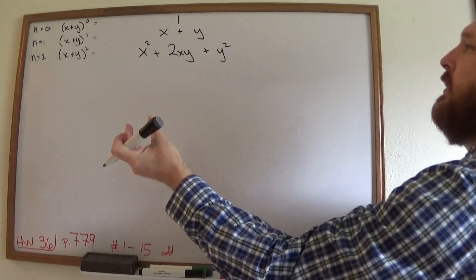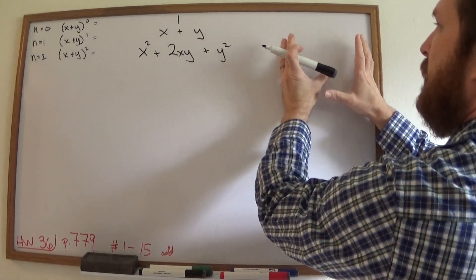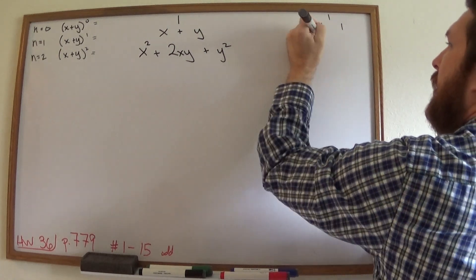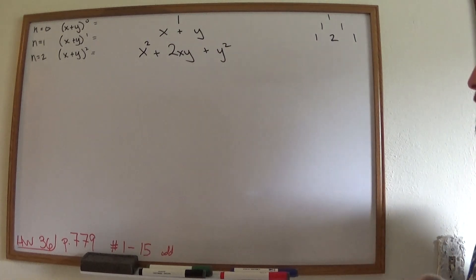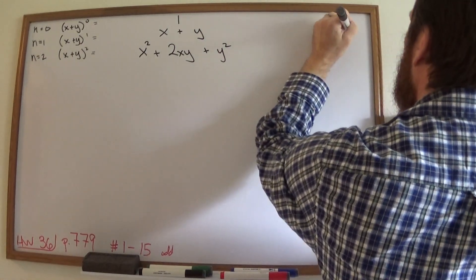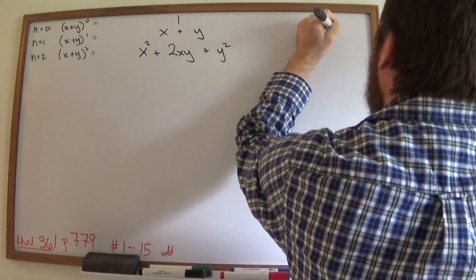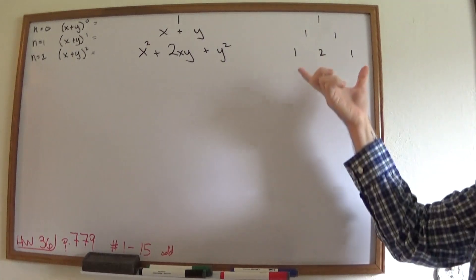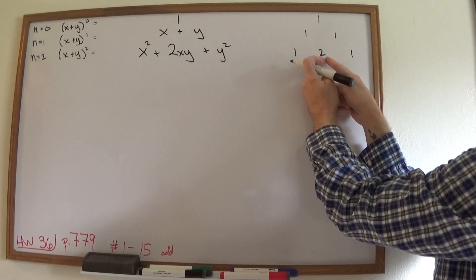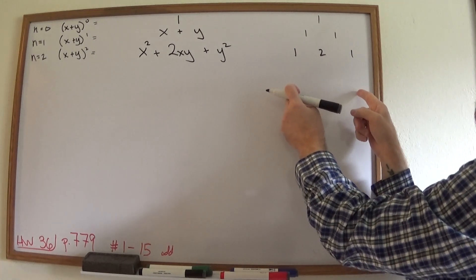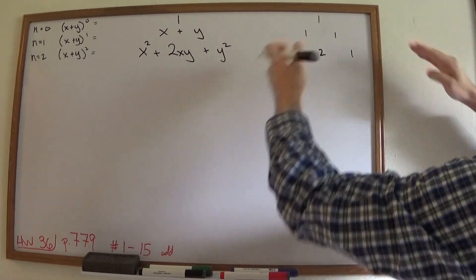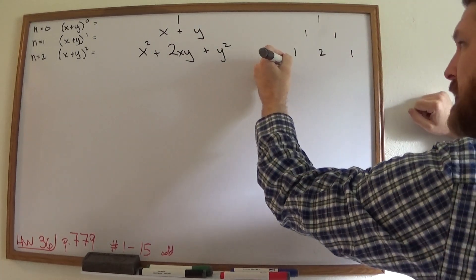Now, if we just look at the coefficients and order them the same way, we have: 1; then 1, 1; then 1, 2, 1. Does this look familiar? This is called Pascal's Triangle. The outsides are always 1s, and you get the inner values by adding the two numbers above them together.